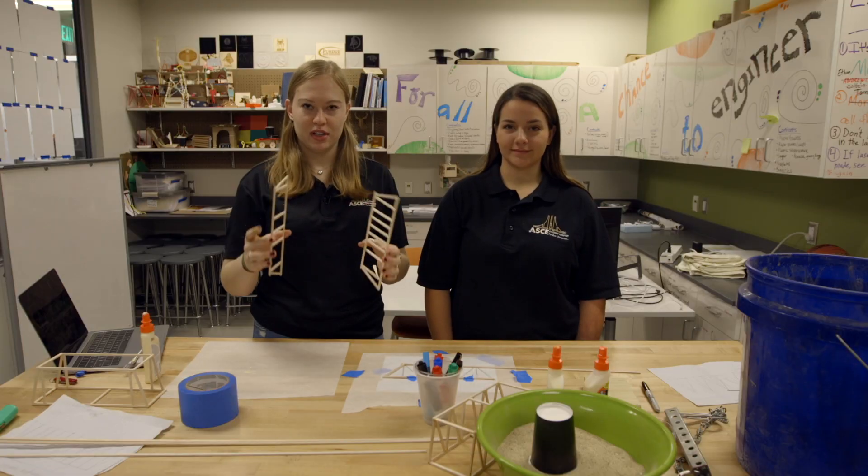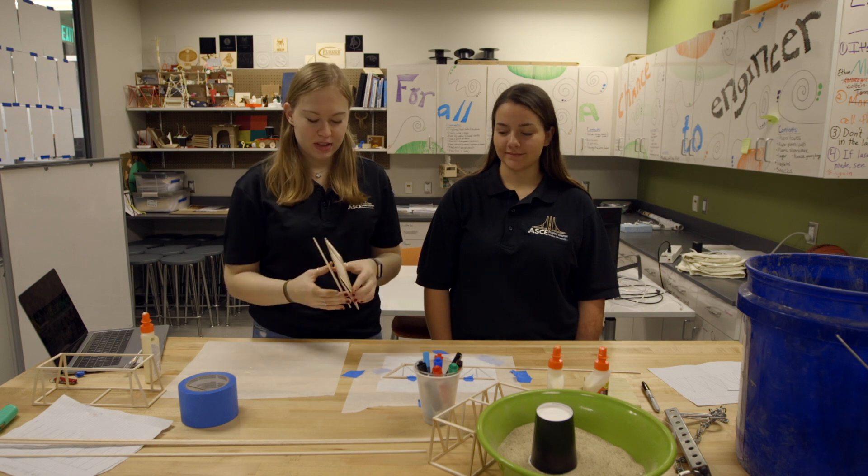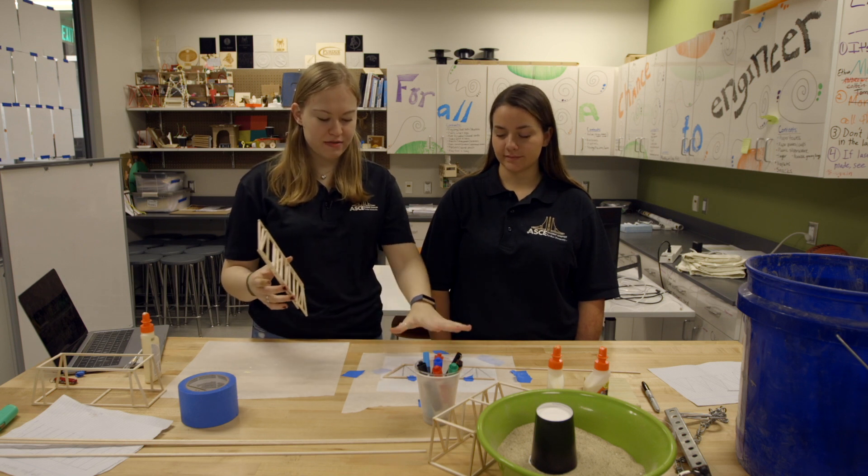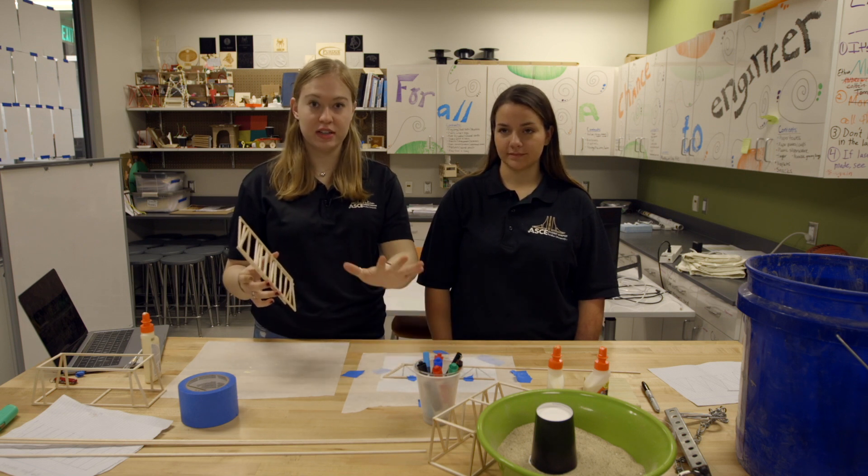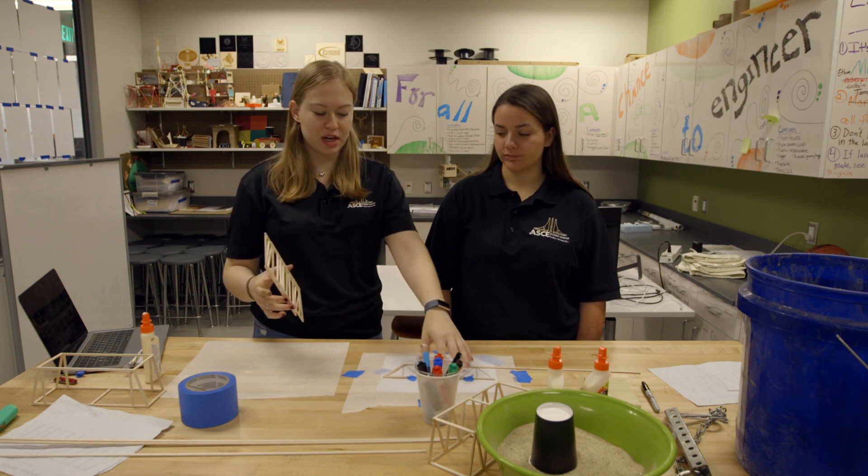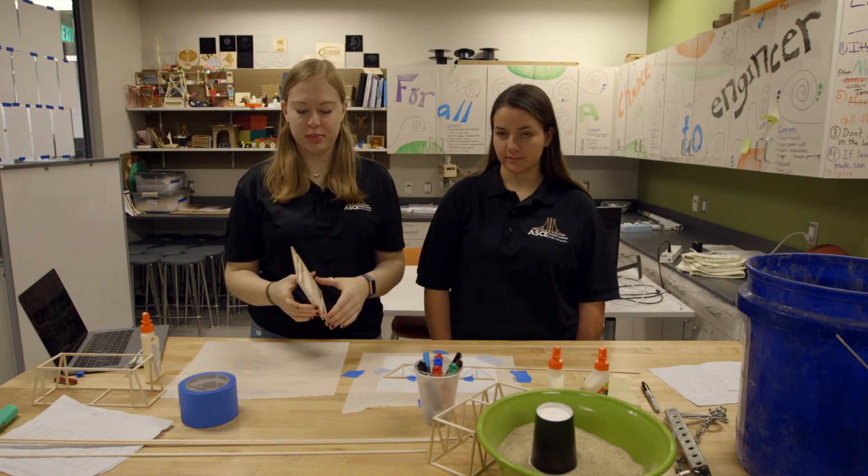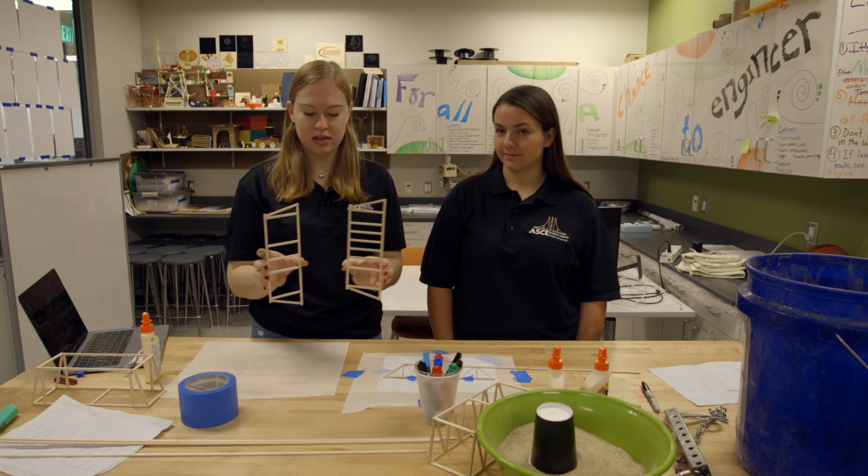Now we're going to put two sides of the bridge together. Once you have glued everything together and it is dried and everything is good, you're going to take all your members up from the tape and from your template, and you're going to have your two sides.